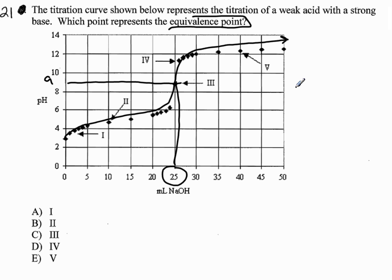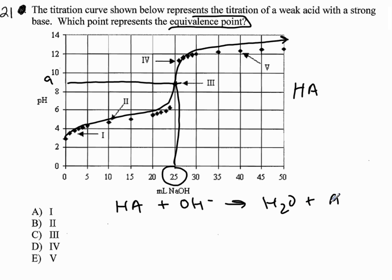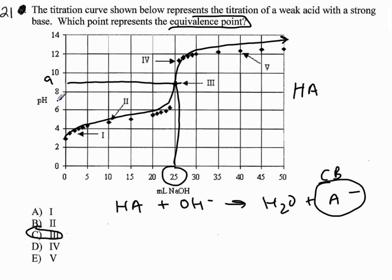Whenever you titrate a weak acid HA with a strong base, you're adding OH⁻. Ultimately you're going to make water at equivalence, plus A⁻. That negative ion is going to act as a conjugate base, so it's going to be basic. The pH at equivalence of a weak acid titration will always be above 7. So the equivalence point for a weak acid strong base titration would be Roman numeral 3 for question 21.